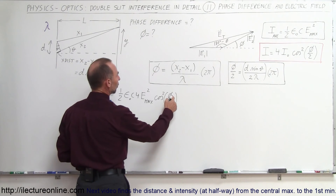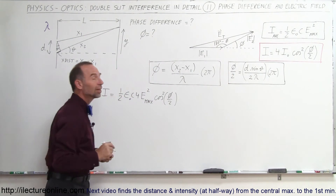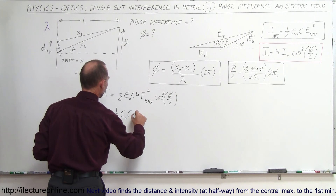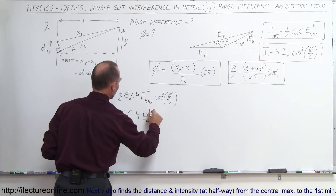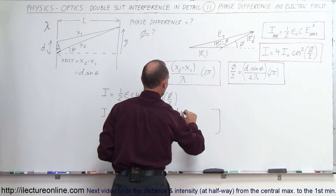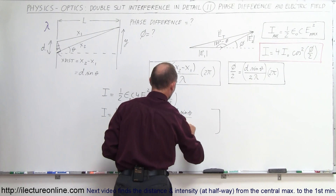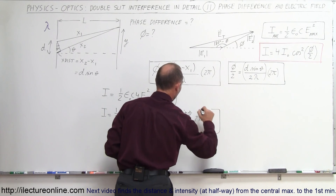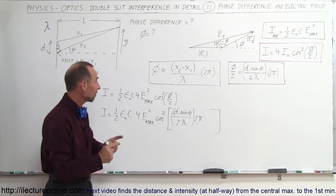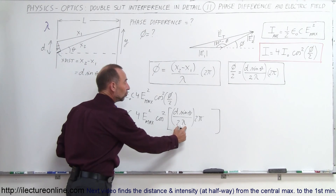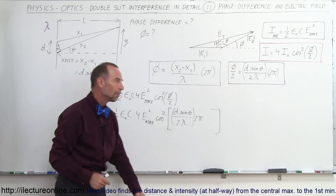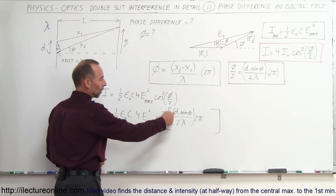Now we're going to replace φ/2 with its expression in terms of θ. So I is equal to one-half times ε₀c times 4E_max² times the cosine squared of D sinθ divided by 2λ times 2π. This quantity D sinθ is the extra distance traveled by the second wave compared to the first wave, and dividing by 2λ times 2π gives us half the phase difference — that's why the factor of one-half is in there.